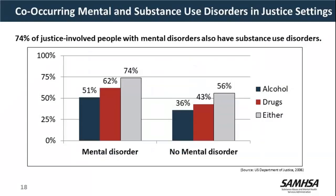Looking at co-occurring disorders, we find that three quarters of the jail and prison population with mental disorders also have co-occurring substance use disorders. We can almost assume there's a co-occurring substance use disorder for this population, and we need to incorporate that into our screening and assessment procedures.